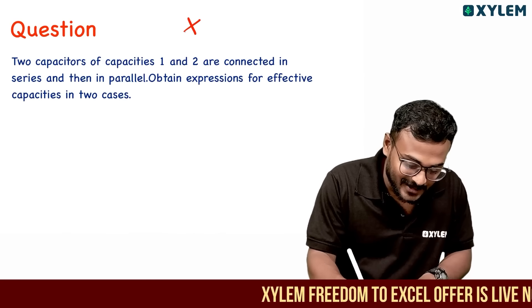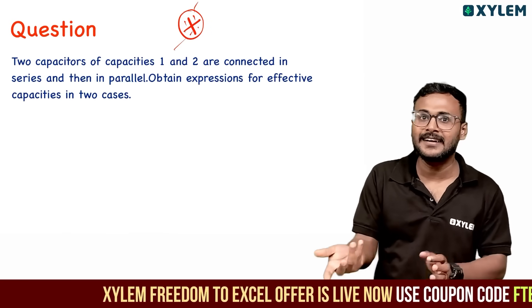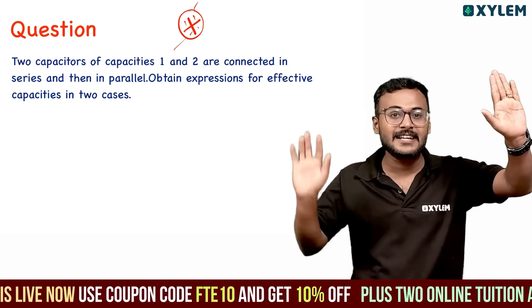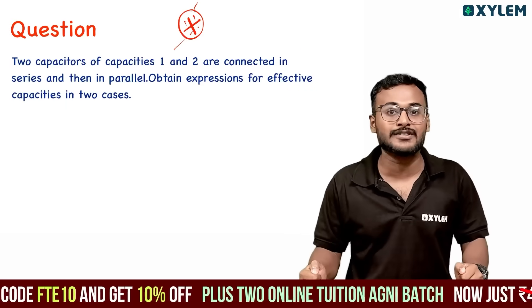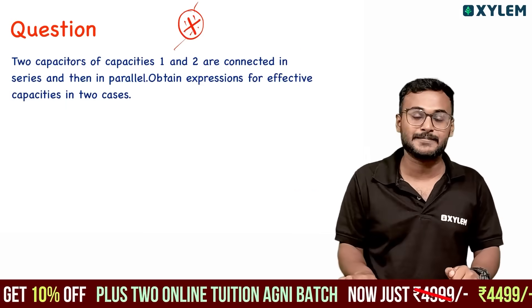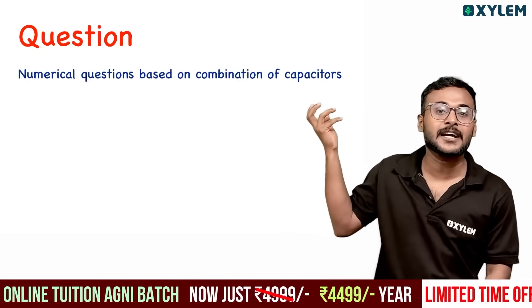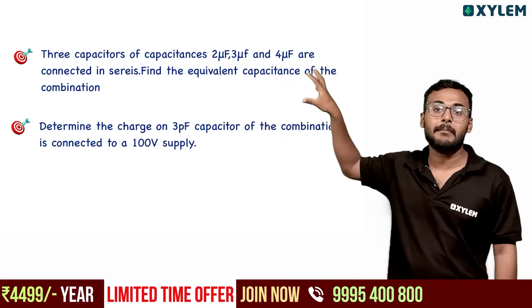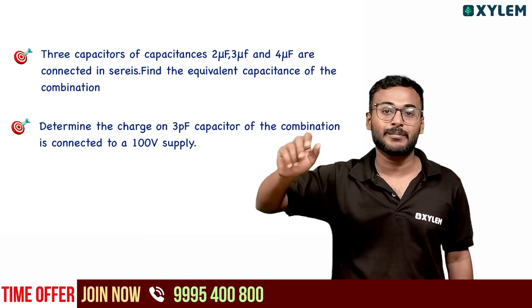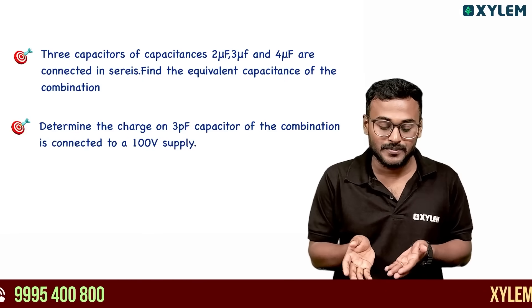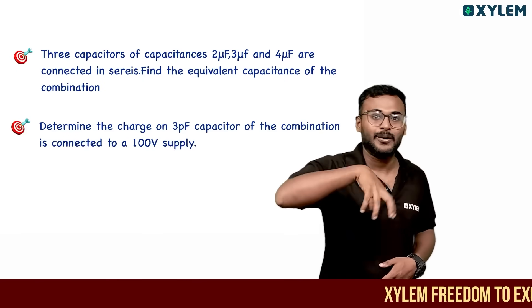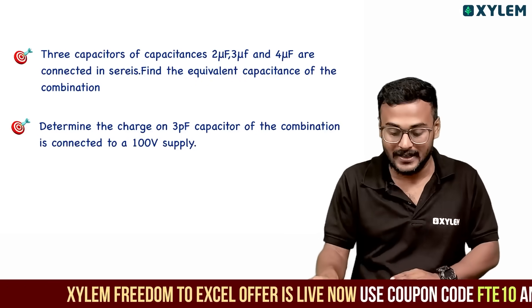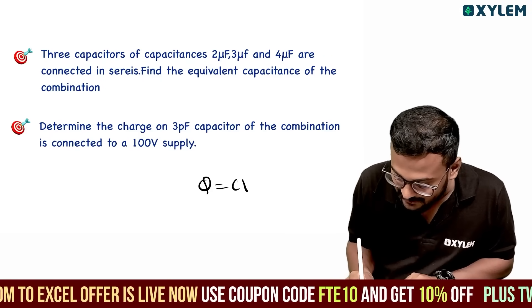We can combine two capacitors — series and parallel. That's effective capacitance. Effective capacitance-oriented numerical questions: three capacitors in series-parallel — find the effective capacitance, voltage, and charge. Q equals CV oriented — graph, slope — learn the same thing.